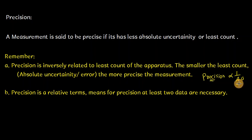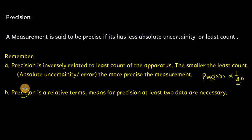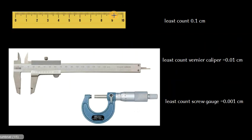The second part: precision is a relative term, meaning that at least two data points are necessary to speak of precision. You need to compare measurements to determine which is more precise.